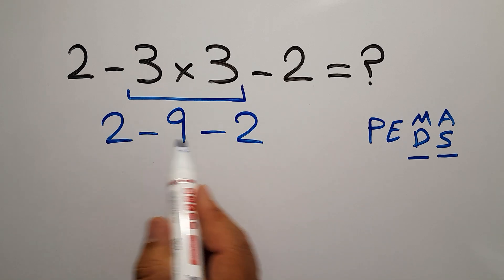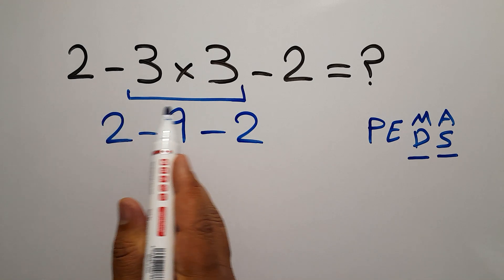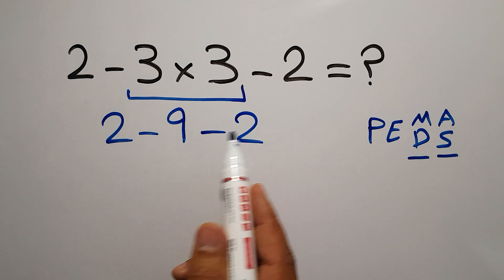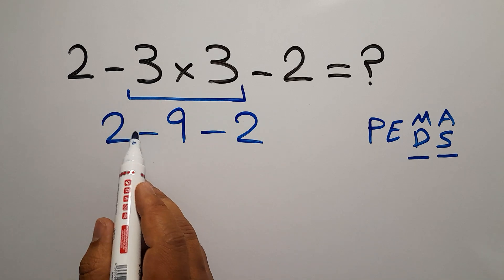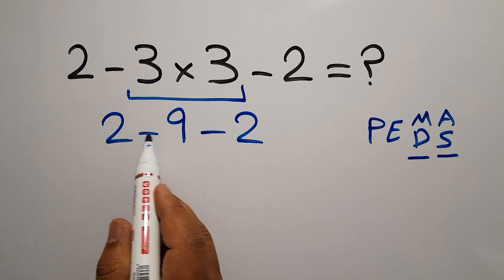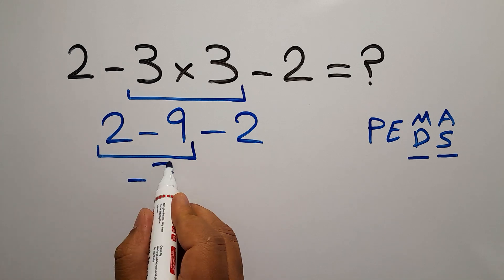And now, we have two subtractions. And we have to work from left to right. First, this subtraction, two minus nine, gives us negative seven.